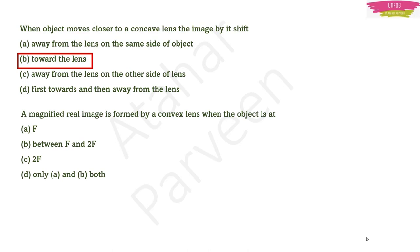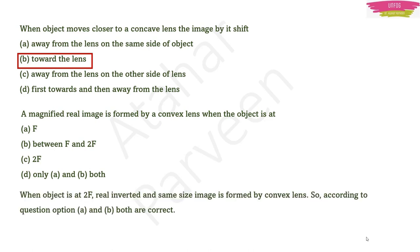Question: A magnified real image is formed by a convex lens when the object is placed where? You get a magnified real image when the object is between F1 and 2F1. At 2F1 you get real, inverted, same-size image. So both option A and B are correct — option D is the right answer.